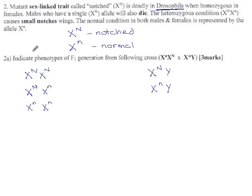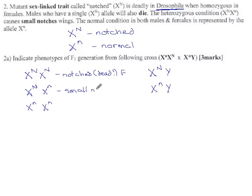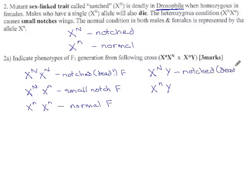X^N X^N — that's the homozygous notched condition — is deadly in Drosophila when homozygous in females. So this would be a notched and also dead female. X^N X^n causes small notches, which is not lethal. So this is a female with a slightly funny-shaped wing, but not enough to kill her. And then most females are normal — they have normal wings and normal life expectancy. Males: X^N Y is the notched condition, meaning death — a notched, dead or stillborn male. And X^n Y is a normal male.